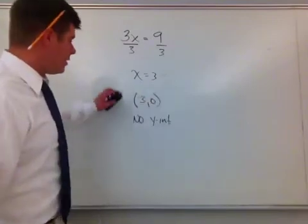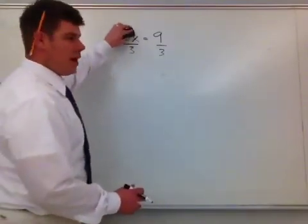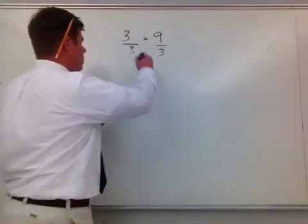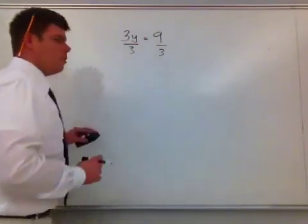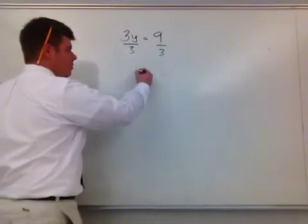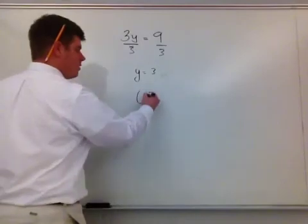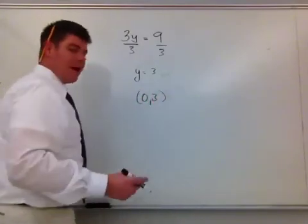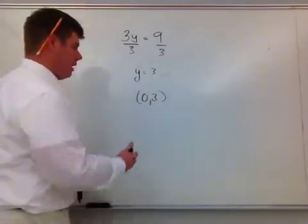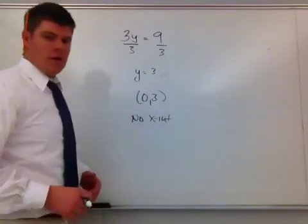So, continuing on with this idea, what happens if that wasn't an x but it was a y? So, what happens if it wasn't an x but it was a y? Same idea. This would, then, be y = 3, and, therefore, I would have a y-intercept of (0,3), but I would not have an x-intercept, so I would say, no x-intercept.